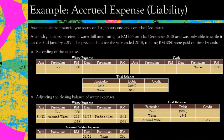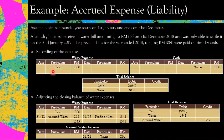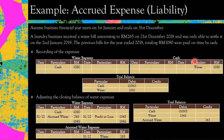The previous bills for the year ended 2018, totalling RM1,080, were paid on time by cash. This means from January through November, you had already paid all expenses by cash, recording debit expense and credit cash for each month from January through November.